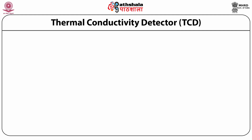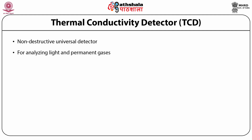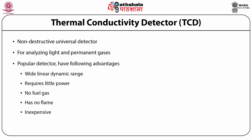Thermal conductivity detector is a non-destructive universal detector which is most commonly used for the analysis of light and permanent gases. Although it is one of the least sensitive gas chromatography detectors, it has advantages such as wide linear dynamic range, requires little power and no fuel gas, has no flame, and is inexpensive. Thermal conductivity detector is a popular detector and sometimes the only choice for few applications. It can be used in portable micro gas chromatographs as it can be easily miniaturized and run on low power consumption.